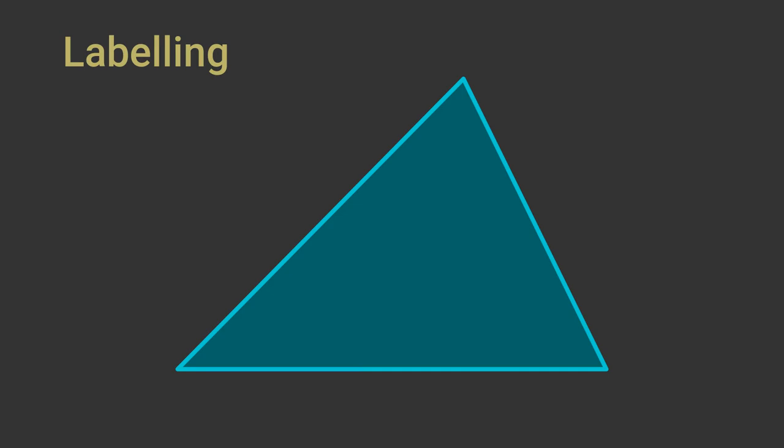It is very important to label the triangle correctly, otherwise the cosine rule formula won't work. This was covered in the sine rule video, but we will quickly repeat it here because it is important.